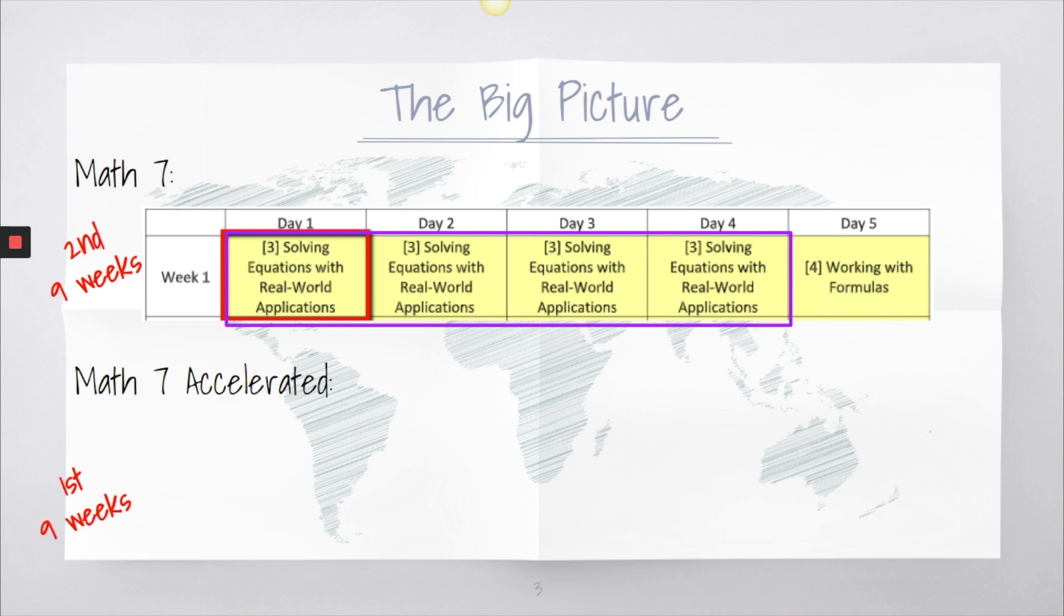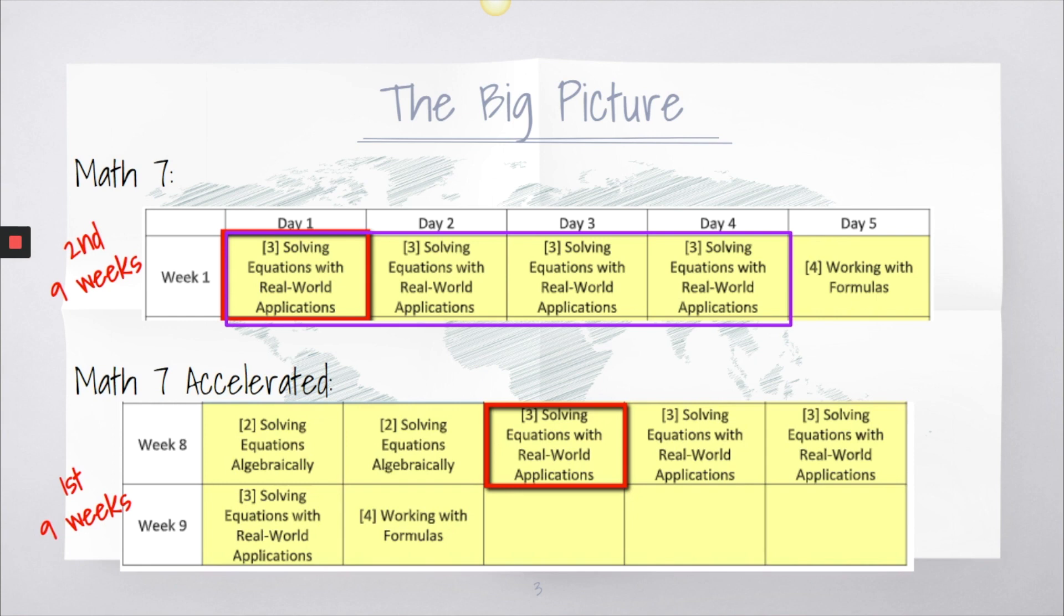There's many activities within this one lesson. For Math 7 Accelerated, this is still in the first 9 weeks. And this lesson will be done across 4 days between Weeks 8 and Weeks 9. Our activity today would still be Day 1, but you can see that this lesson, once again, is expanded over 4 days.